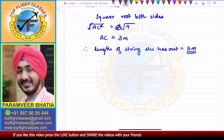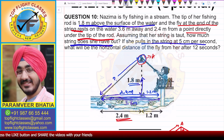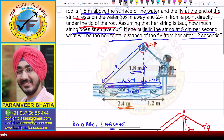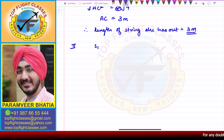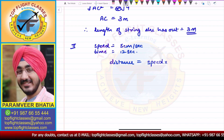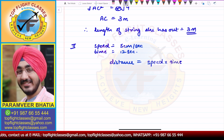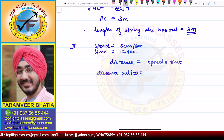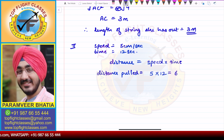Now in the second part of the question, she pulls the string at 5 centimeters per second, and we need to find the horizontal distance of the fly from her after 12 seconds. Speed is 5 centimeters per second and time given is 12 seconds. Distance = speed × time, so the distance pulled = 5 cm/s × 12 s = 60 centimeters = 0.6 meters pulled in 12 seconds.